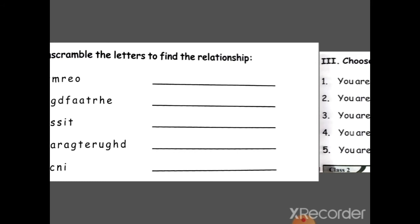The next activity has jumbled words — inko ulta ulta likha hua hai. Inko aap seedha likhoge to wo ek relationship ka naam banega. Try to do it. Jaisa isme se ek grandfather hai, ek sister hai, ek niece hai, ek mother hai — to wo aapko banana hai, inki spellings seedhi karke aapko isme write karna hai.